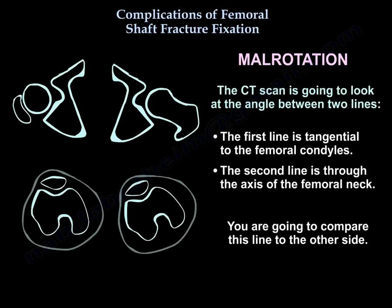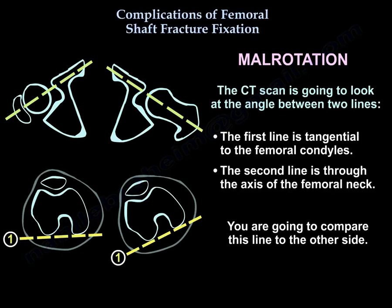What the CT scan looks at is the angle between two lines: the first line is tangential to the femoral condyles, and the second line is through the axis of the femoral neck. You then compare this angle to the contralateral side.